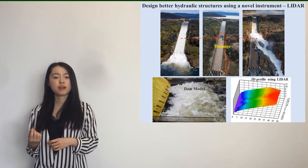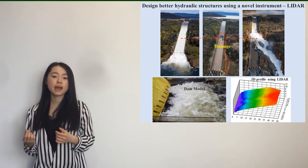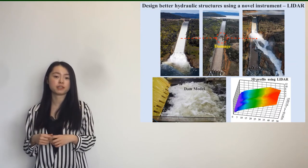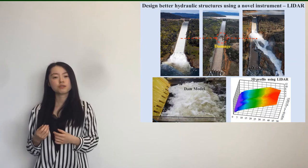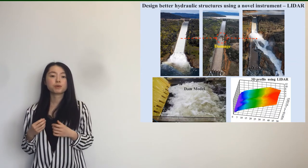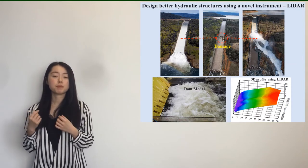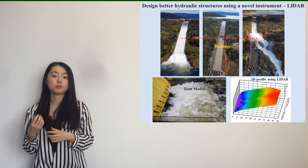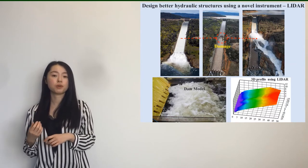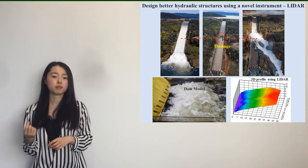The free surface of air-water flows strongly fluctuates in three dimensions, and air consistently entrains into the flow through the free surface. So far we have limited understanding of the free surface, but we believe there is a potential link between the free surface and some important factors we need to consider when designing structures — for example, the pressures underneath, the flow velocities, and the air bubbles in the flow.